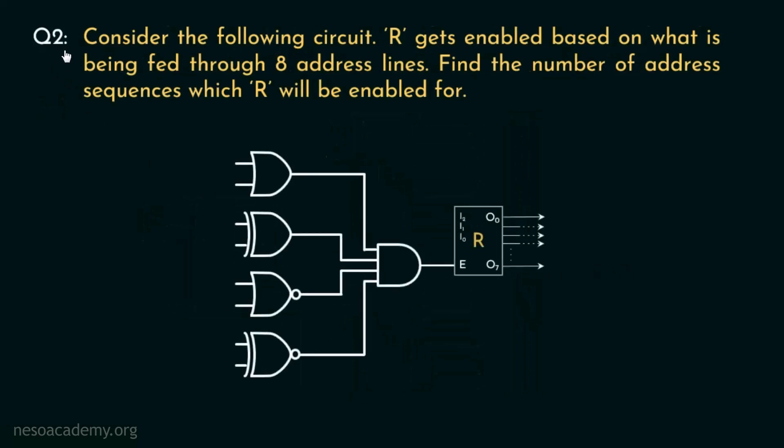Now the second question states, consider the following circuit. This is the circuit we are supposed to consider. R, that is this device R, gets enabled based on what is being fed through 8 address lines, and we have to find out the number of address sequences which R will be enabled for. Now let's try to solve it.